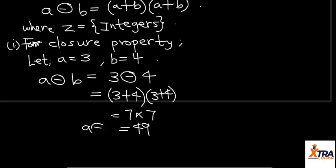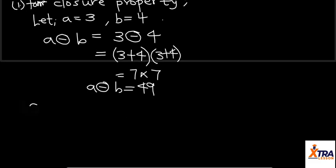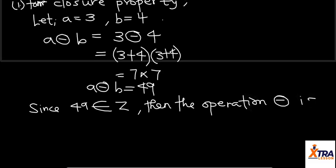So it means A⊕B is 49. Since 49 is also an integer, since 49 is an element of set Z, then the operation is closed under set Z. So that's for part (i).